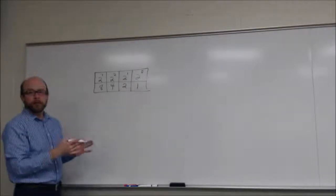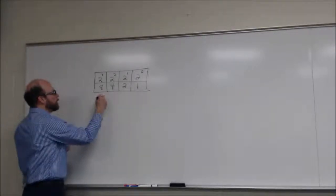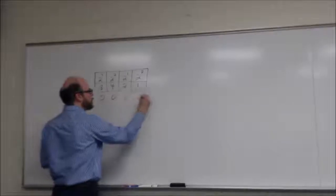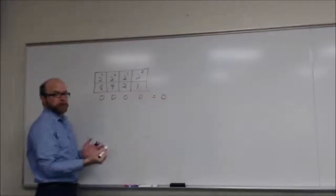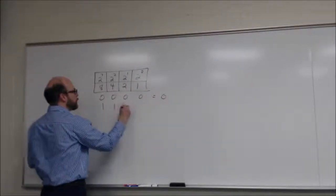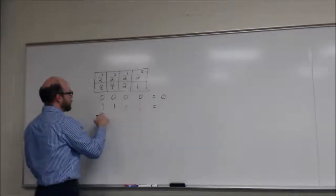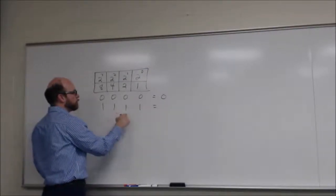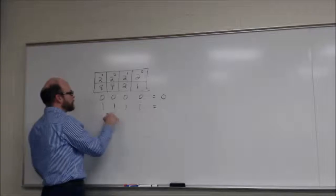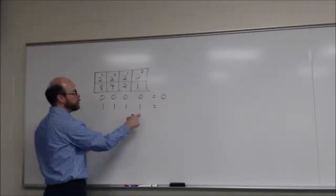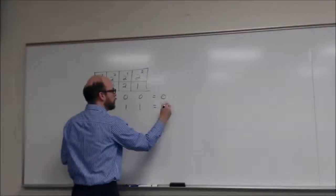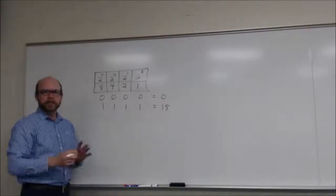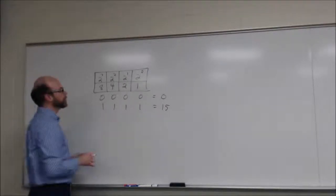Because we're only dealing with four parts, if all four of these are zero, then that still equals zero. If all four of these are one, then we've got eight plus four plus two, so that's eight plus four is twelve, plus two is fourteen, plus one is fifteen. So right now we're only going to deal with values between zero and fifteen, just to kind of get used to the idea.